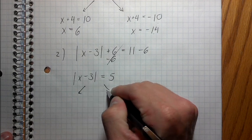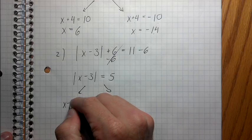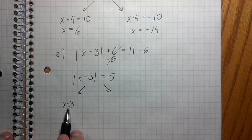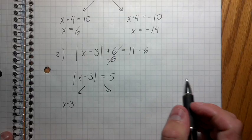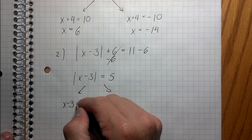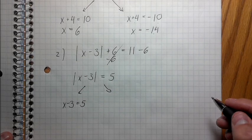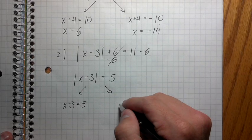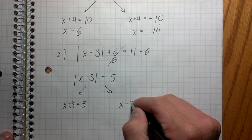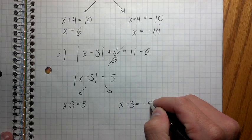First equation is going to be x minus three. Notice, when I break it into the equations, I drop these absolute value bars. It goes away, right? So x minus three equals positive five. That's like the positive version. And then I'm going to do x minus three equals negative five because that's the negative version.